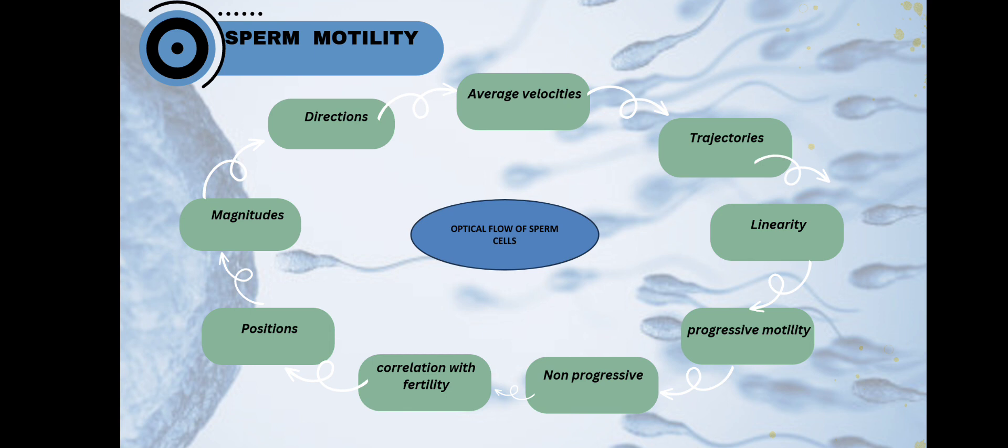In conclusion, we have this chart. This chart represents what we can get from the optical flow of sperm cells. First, the position, magnitude and direction we directly get from the codes. After that, we can calculate the velocity for each frame, and from the velocities we are able to get the trajectories by overlapping the graphs with the original video. From the trajectories, we can analyze the linearity and curvicity of the sperm cells and vectors. From the linearity, we can analyze the progressive motility and non-progressive motility. If the sperm is linear, then it has progressive motility. If it's curved, then it's non-progressive. And finally, we can correlate this with fertility.